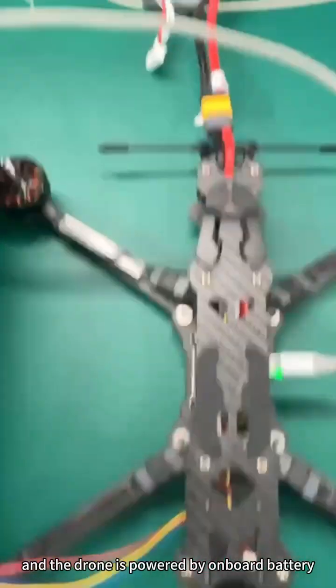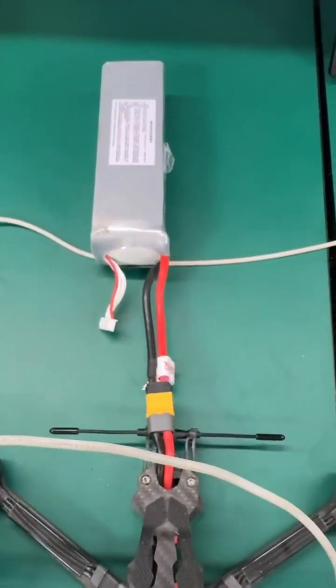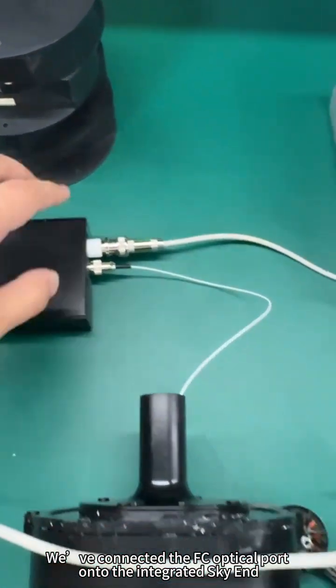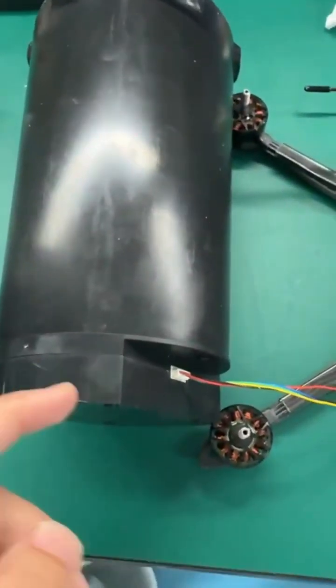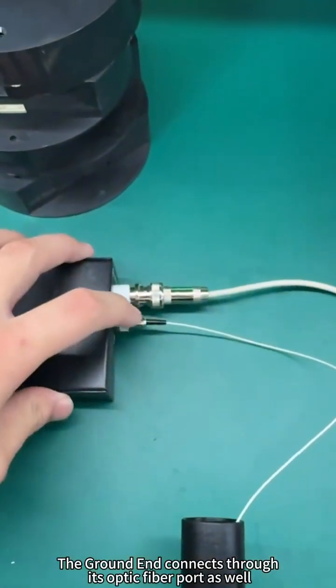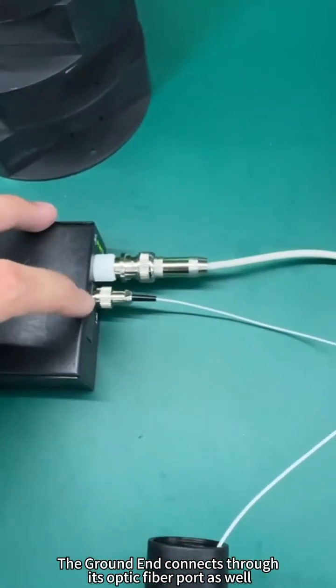The drone is powered by onboard batteries. As you can see, we've connected the FC optical port onto the integrated sky end. The ground end connects through its optic fiber ports as well.